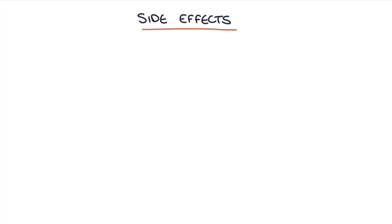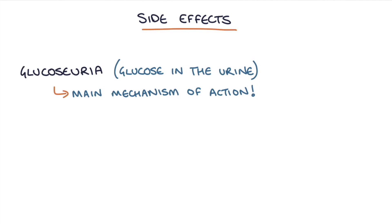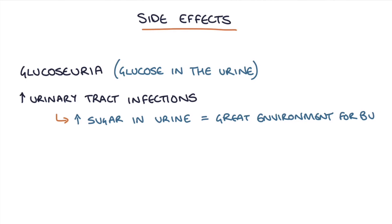Let's look at the side effects. One of the main side effects is glucosuria — glucose in the urine — since this is the main mechanism of action of these medications. The second side effect is an increased rate of urinary tract infections, because increasing the amount of sugar in the urine provides a great environment for bugs to grow, increasing the risk of urinary tract infections and candida infections, commonly called thrush.